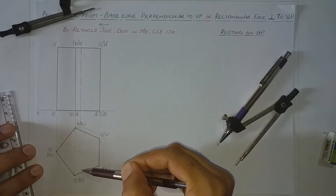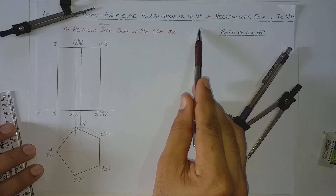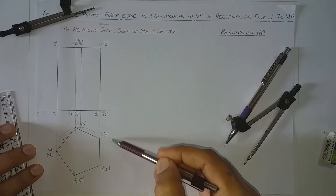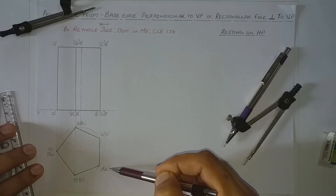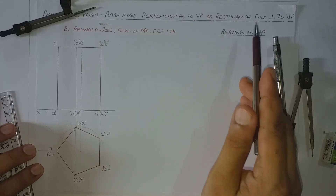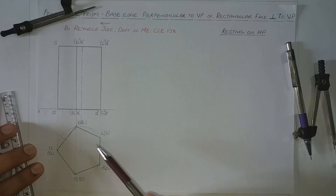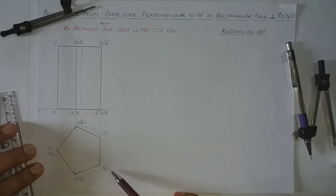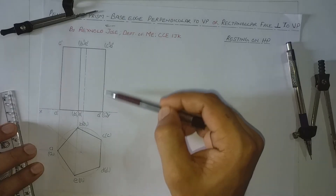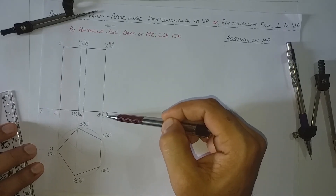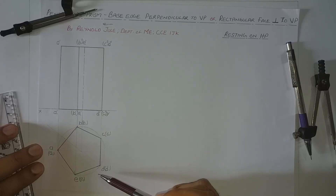This forms the front view and this forms the top view in this simple position. Here the base edge is perpendicular to VP. Which base edge is perpendicular to VP? It is the base edge C1D1. This particular base edge is perpendicular to VP, meaning it is perpendicular to the XY line in the top view. It is also mentioned that the rectangular face CCD1D is perpendicular to VP. In the front view this rectangular face appears as a line C'D'C1D1, and it is similarly a line in the top view — not visible as a rectangle in either view.